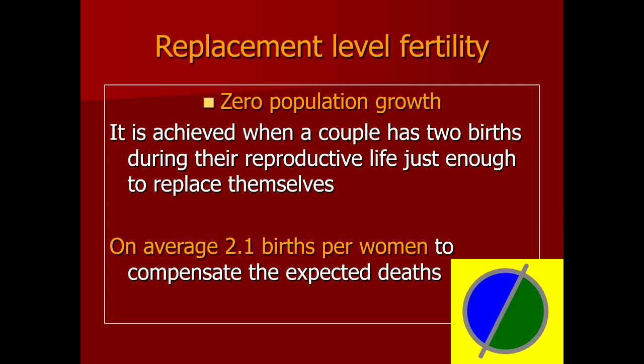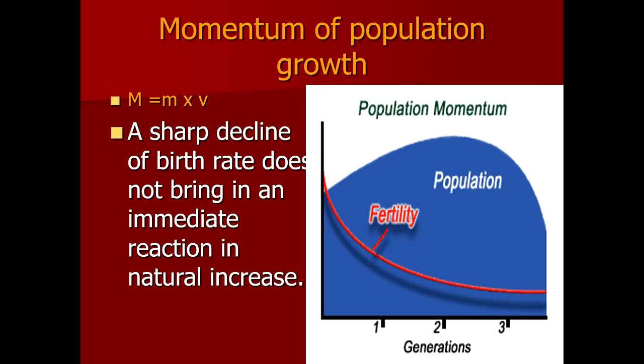To maintain equilibrium, a woman should give birth to 2.1 children in their reproductive lifespan. This is not practically possible as a fraction, but statistically — if one woman produces two children, another produces three, and another couple is infertile — the mean comes to approximately 2.1 births per woman, which results in a zero population growth rate.